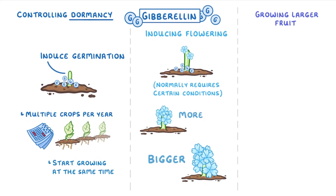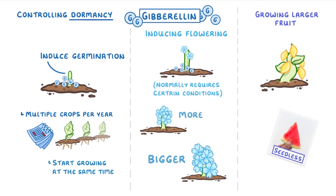The final use of gibberellin is growing larger fruits. This is particularly useful with seedless varieties of fruit, which naturally don't grow as large as their seeded relatives, but by giving them gibberellin we can make sure that their fruits grow well.